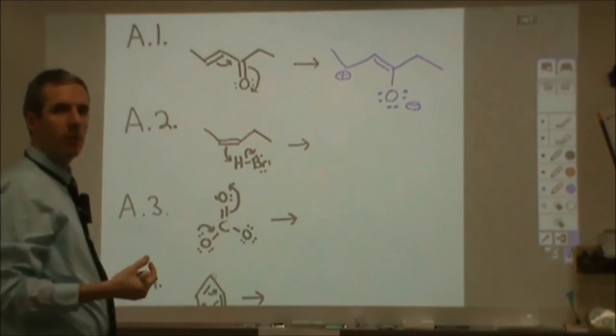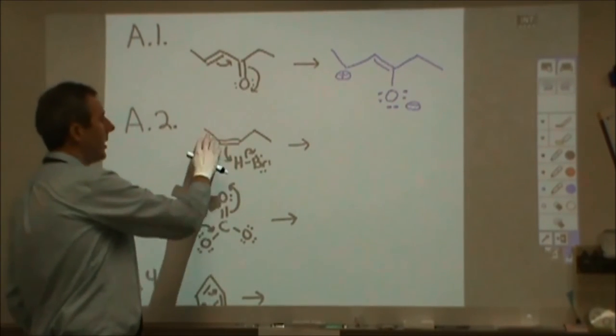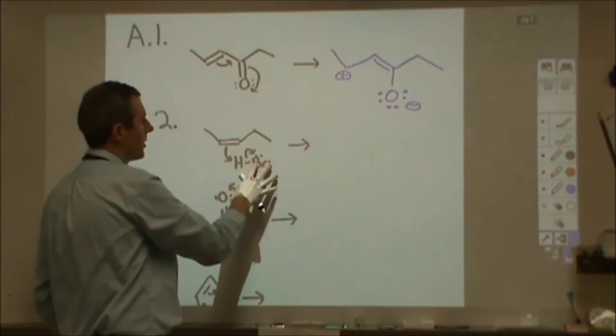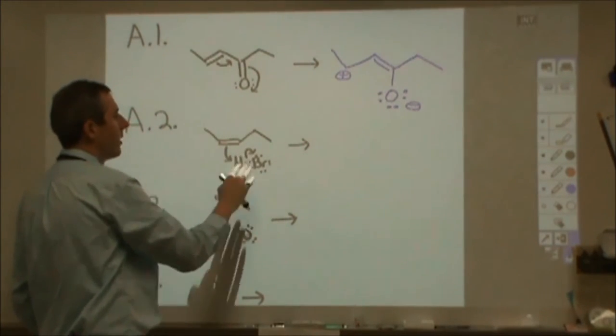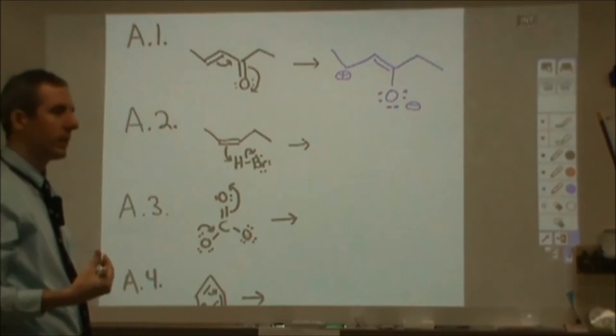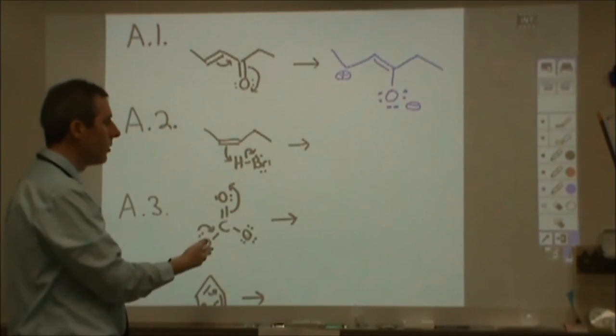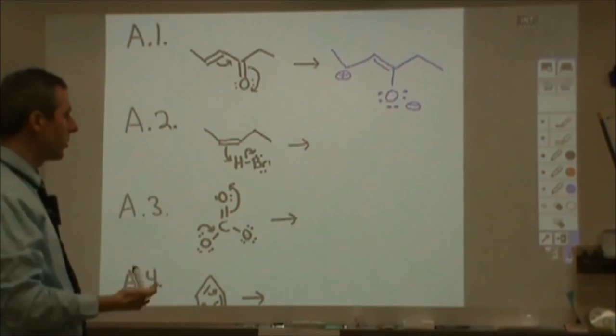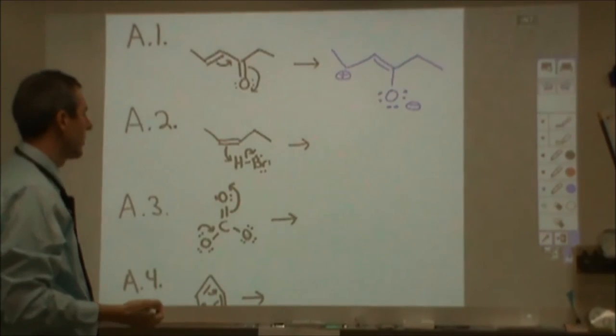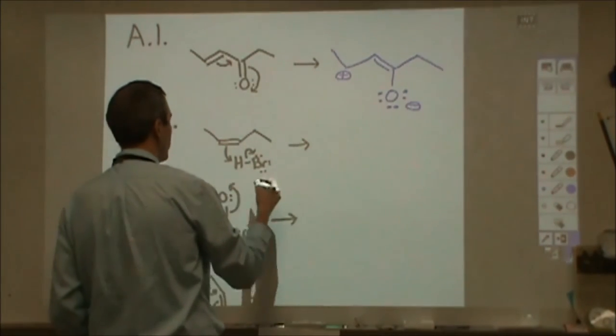So what you need to be able to do is, if you're given a starting reagent or a set of reagents with curly arrows drawn, be able to draw what that will turn into. I'm going to do a few for you, but go ahead and try them if you haven't yet, and then you can come back and see how you did.